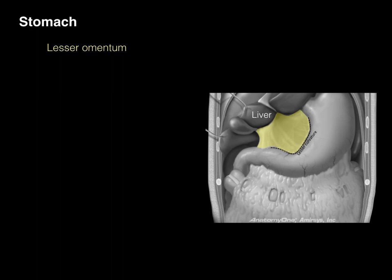A word that means liver is hepato — think hepatocytes, hepatitis. The lesser omentum really has two different components. There's the pyloric part of the stomach, where the pyloric sphincter is, and then the duodenum is next. So this lesser omentum attaches to the duodenum and the stomach and goes to the liver.